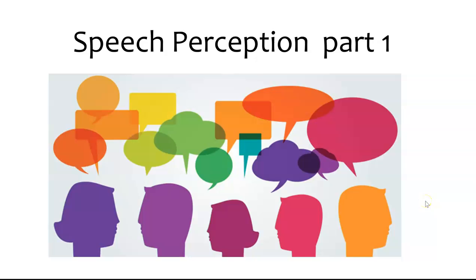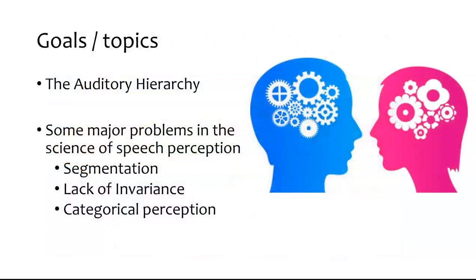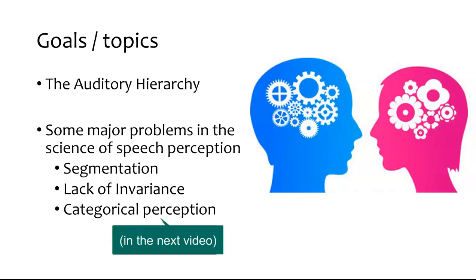In the study of speech perception, there are a lot of interesting topics that we'll begin to talk about in this video. The goal for this unit of class is to understand some of these things listed on the screen here, starting with the auditory hierarchy, and then we'll review some of the major problems in the science of speech perception: notably the segmentation problem, the lack of invariance problem, and categorical perception.